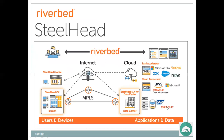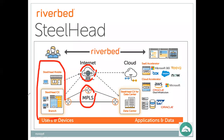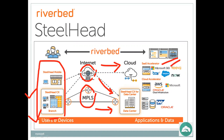Riverbed's product is called SteelHead. The architecture shows internet connections and MPLS connections, with users and devices connecting using SteelHead — SteelHead Mobile, SteelHead CX, and SteelHead Branch models. People connect from here to the cloud through internet, and through MPLS connection to the data center. Applications include SaaS accelerator, Microsoft 365, Salesforce, cloud accelerators like AWS, Azure, Oracle, SAP — SteelHead is helping to do WAN optimizations for these different applications between sites.